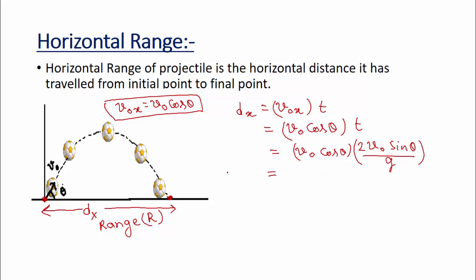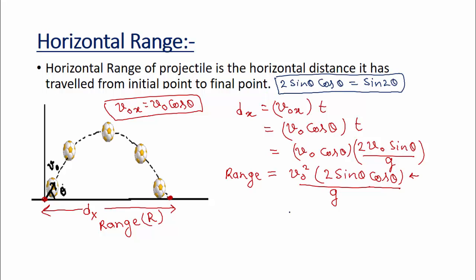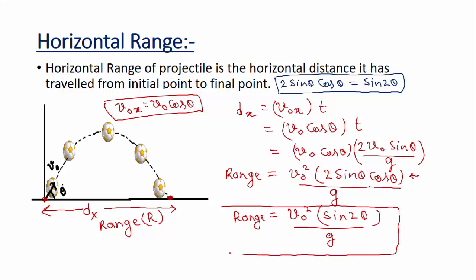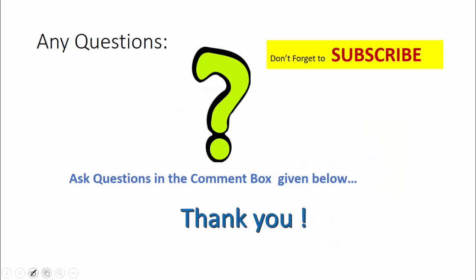Simplifying: dx equals v₀²·2·sinθ·cosθ divided by g. Using the identity 2·sinθ·cosθ equals sin2θ, the range formula becomes R equals v₀²·sin2θ divided by g. You can use this formula directly or derive it from the kinematic equations. In the next video we will discuss the maximum angle of a projectile and other formulas — stay tuned, and don't forget to subscribe, share, and like for daily updates!